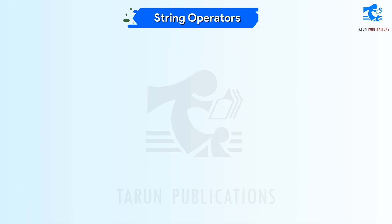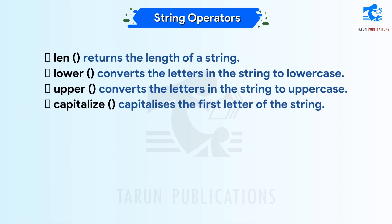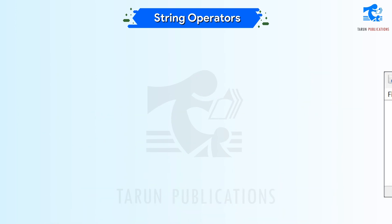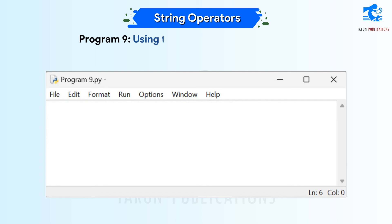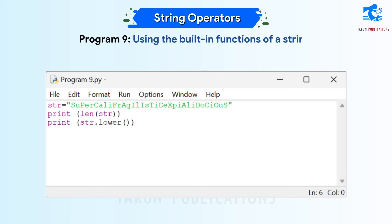String Built-in Functions. len() returns the length of a string. lower() converts the letters in the string to lowercase. upper() converts the letters in the string to uppercase. capitalize() capitalizes the first letter of the string. Program 9: using the built-in functions of a string — code shown.